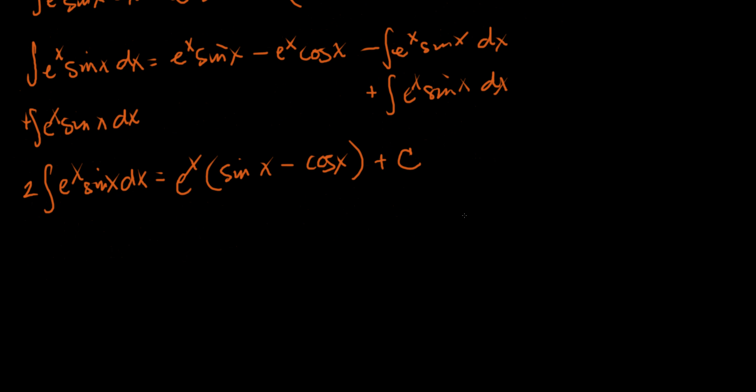And I could wait to the very end to add in my constant. I'm going to put it in now. We want to get rid of this two here, so we need to divide both sides by two. Let's cancel and we finally see that the integral of e to the x sine of x dx is equal to one half e to the x times sine of x minus cosine of x plus c.